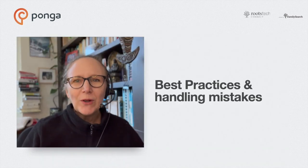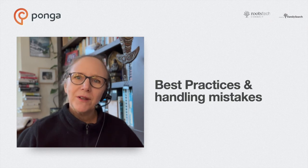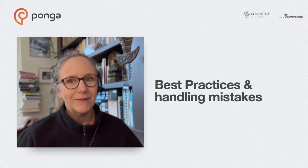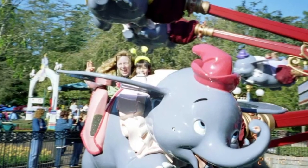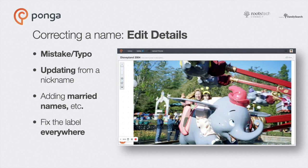Now that you see how it works, let's talk about best practices, starting with how to handle mistakes. There are two cases. The first is the spelling mistake you might make in the gallery — when you fix it, you want to fix it everywhere. This little girl Nicole had the childhood name Nikki, which everyone seemed to spell incorrectly. Use this technique to correct typos, update nicknames, and add married names. The best part is it fixes the label everywhere.